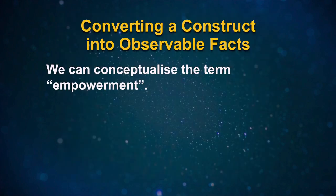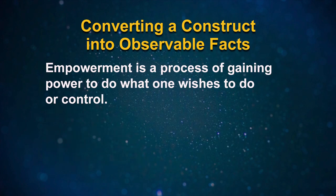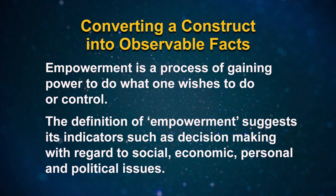On similar lines, we can conceptualize the term empowerment. First, we have to define the concept variable — empowerment — and then respond to the definitions in terms of observable facts and characteristics. In very simple terms, empowerment is a process of gaining power to do what one wishes or is controlled. The definition of empowerment suggests indicators such as decision-making with regard to social, economic, personal, and political issues.